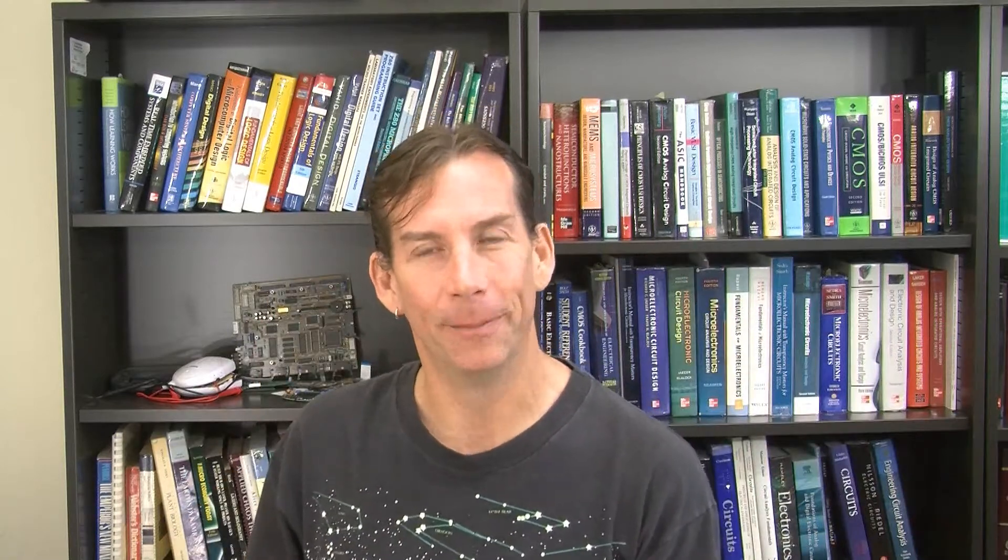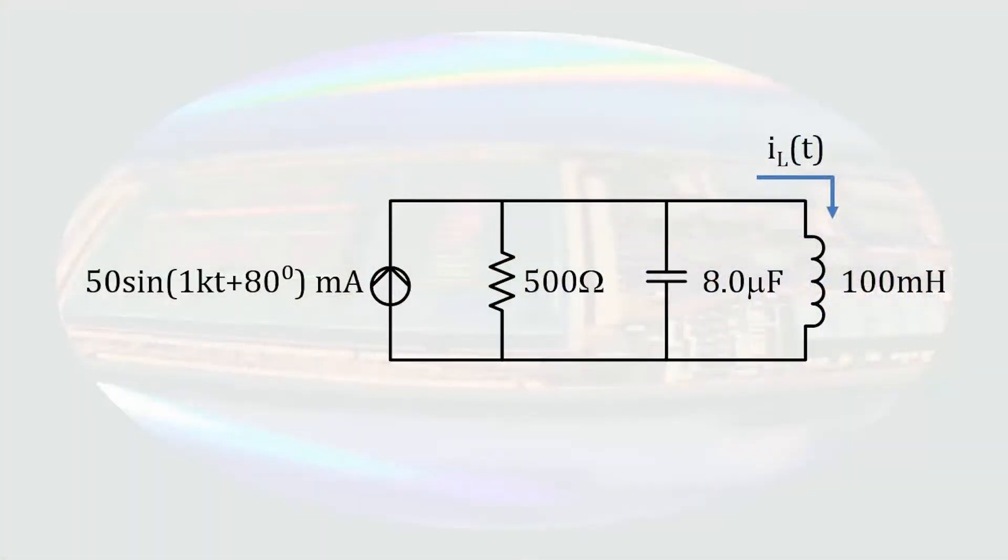That was quite a rabbit trail. We still have to finish the problem we are working on. When we started this problem, we were looking for the time-dependent current through the inductor. We have the phasor current through the inductor, so we can convert that to the time domain fairly easily. Remembering the angular frequency of the source, we write the magnitude and the phase into the cosine function, giving us 176.8 cosine 1000t minus 55 degrees milliamps.